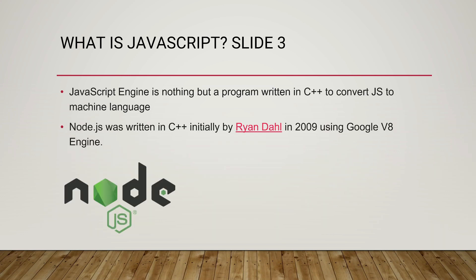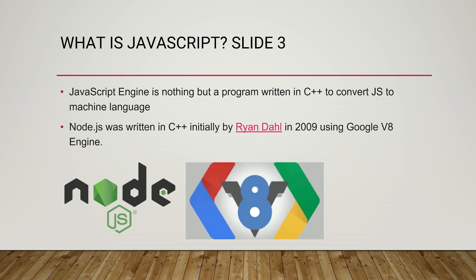Node.js was written in C++, initially by Ryan Dahl in 2009, using the Google V8 engine.